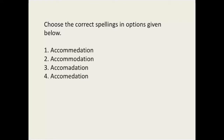For the spelling check, we need to identify the correct spelling of 'accommodation.' The right answer is option two. The correct spelling is 'accommodation' — not 'accomodation.' Vocabulary and pronunciation are key; if you don't know the pronunciation, you won't know the correct spelling. Two is the right answer.